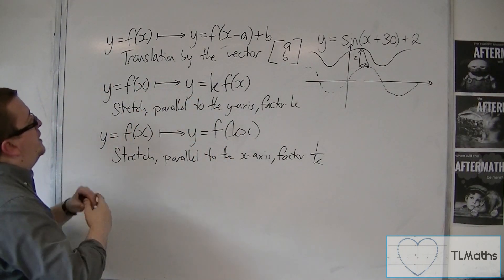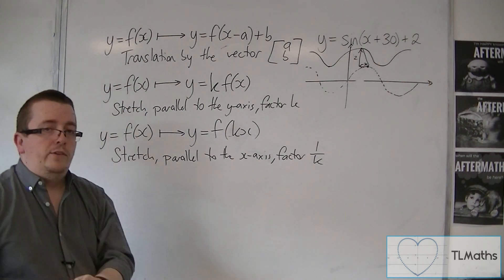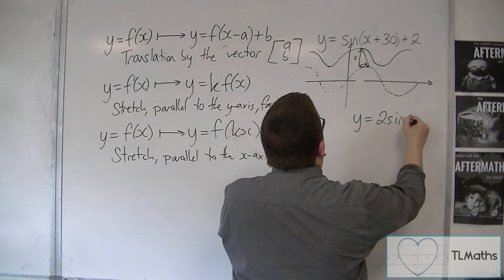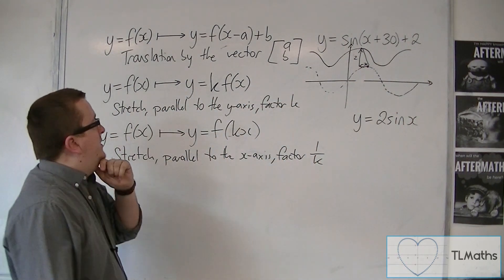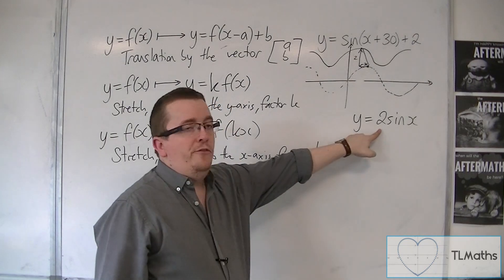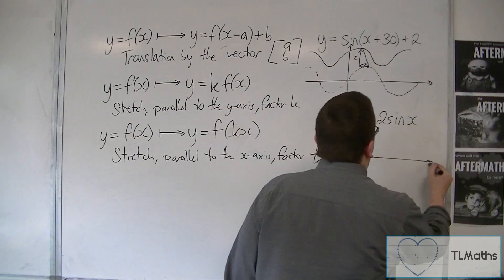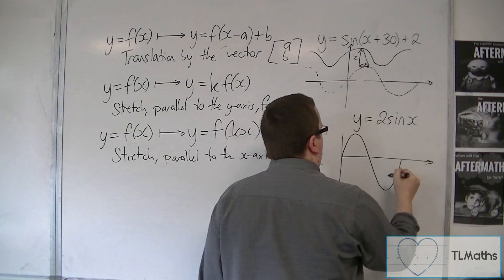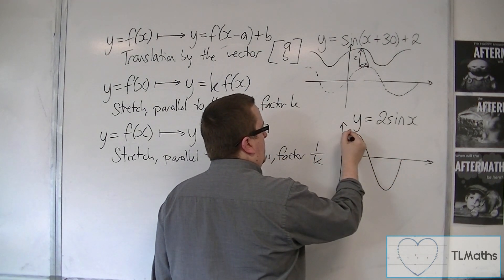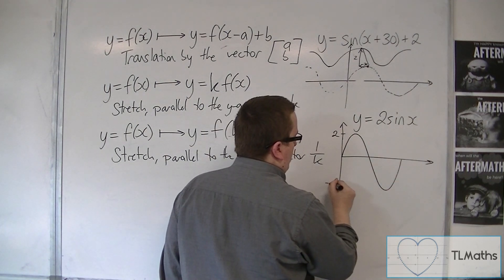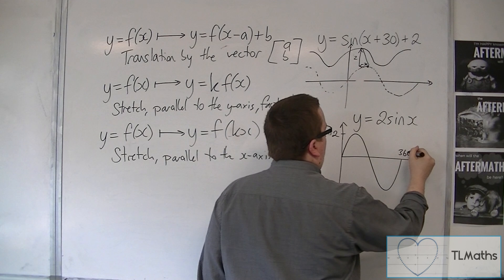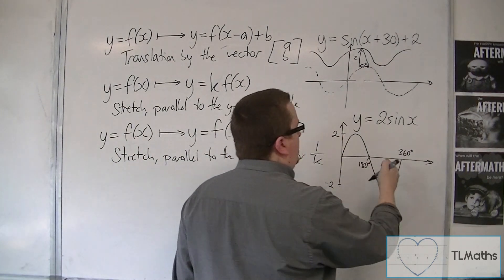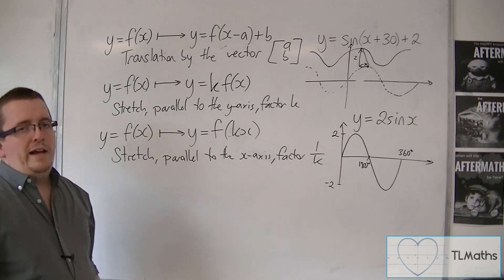Let's look at stretching parallel to the y-axis first. If I had y = 2sin(x), that is a stretch parallel to the y-axis by factor 2. Sketching it between 0 and 360, it has the same basic shape, but instead of going between 1 and −1, it goes between 2 and −2. The x-positions of key points are exactly the same: 90, 180, 270, 360 are unchanged. It's just been stretched parallel to the y-axis.